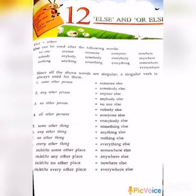Else is equal to 'other'. First, given the introduction: else can be used after the following words — no one else, anyone else, someone else, everyone else, and or else, which is also equal to 'other'. And then nobody, anybody, somebody, everybody, anywhere.